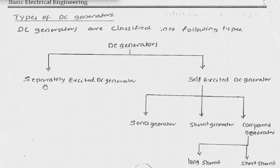DC generators are broadly classified into separately excited DC generators and self-excited DC generators. In a separately excited DC generator, the field winding is supplied with an external DC supply. Since the generator produces direct current, that same DC can be used for its own field — if the generated voltage is used to excite the field winding, we call it a self-excited generator.